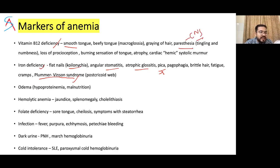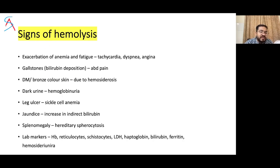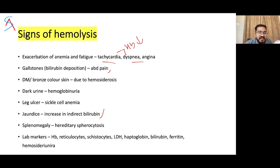In vitamin B12 deficiency: smooth beefy tongue, graying of hair, and paresthesia affecting the CNS with tingling and numbness. Signs of hemolysis include gallstone formation due to bilirubin deposition causing abdominal pain, bronze skin color due to hemosiderosis, diabetes, and increased indirect bilirubin. In sickle cell anemia, there is jaundice plus painful hand swelling and splenomegaly.